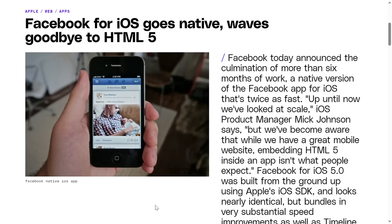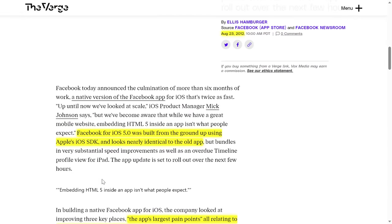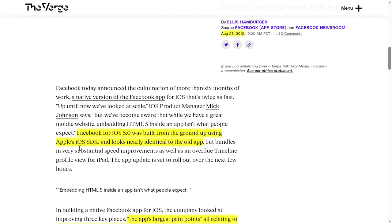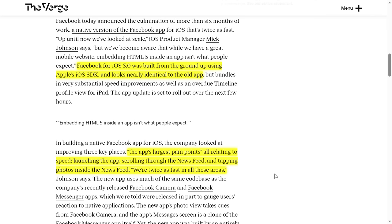In 2012, Facebook announced they had abandoned HTML5 and had rewritten their entire mobile app to be iOS native. This was a six-month ground-up rewrite using the Apple iOS SDK, even though the result, quote, looked nearly identical to the old app. Why did they take six months to rewrite an entire application without adding any new features? To fix what they called the, quote, app's largest pain points, all of which were performance problems.